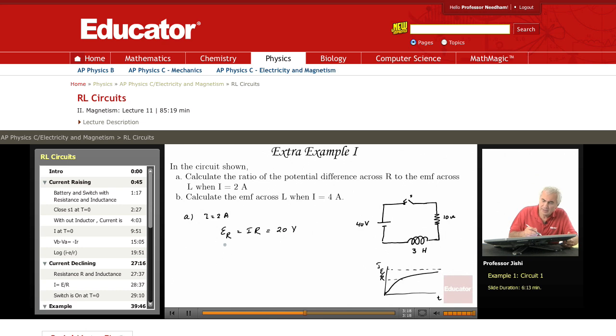And so, since there are only 40 volts, 20 volts appear across the resistance, so 20 volts must appear across the inductor. So what is EL? 40 minus 20, which is 20 volts. So what is ER over EL? They are equal.